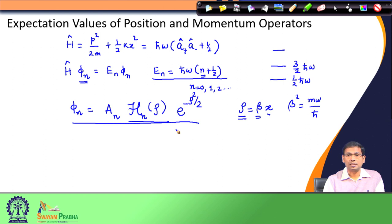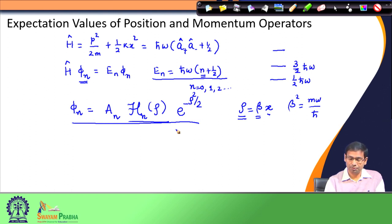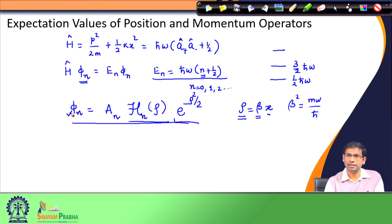We discussed in the last class how the wave functions and the probability density psi-star times psi appear at different values of rho. One important point I would like to remind you of is that the functions phi-n have definite parity — for a given value of n, the eigenfunction is either an even function or an odd function. Any eigenfunction of the harmonic oscillator has a definite parity. What is the advantage of having this definite parity?